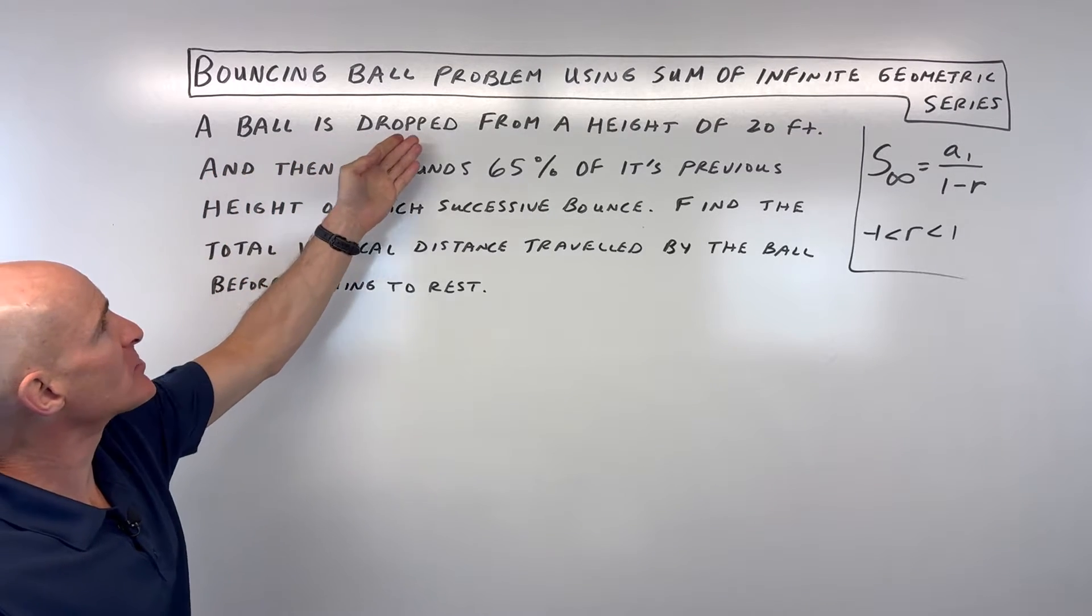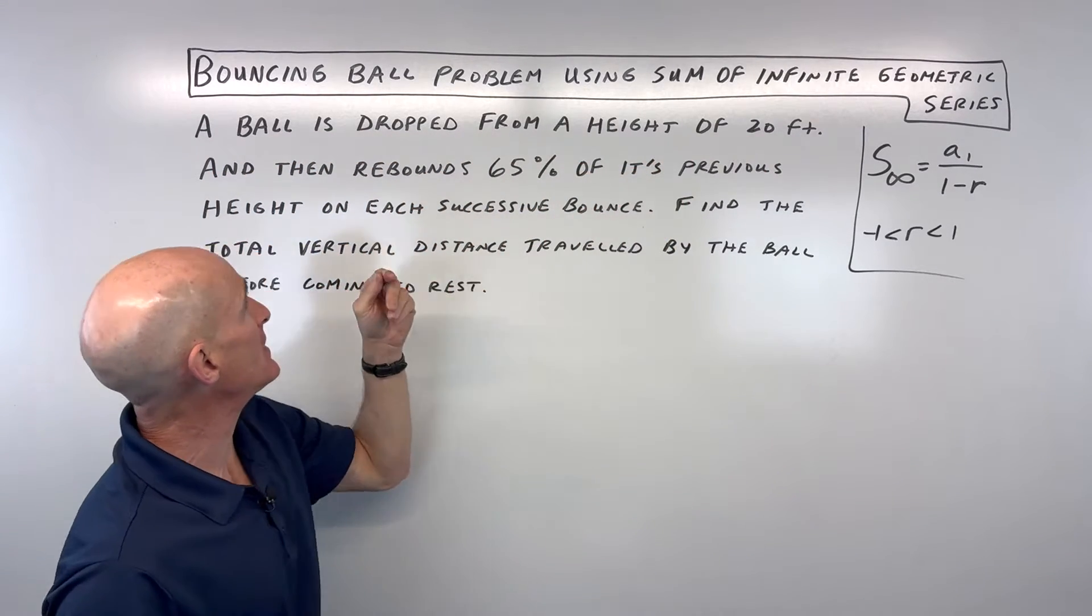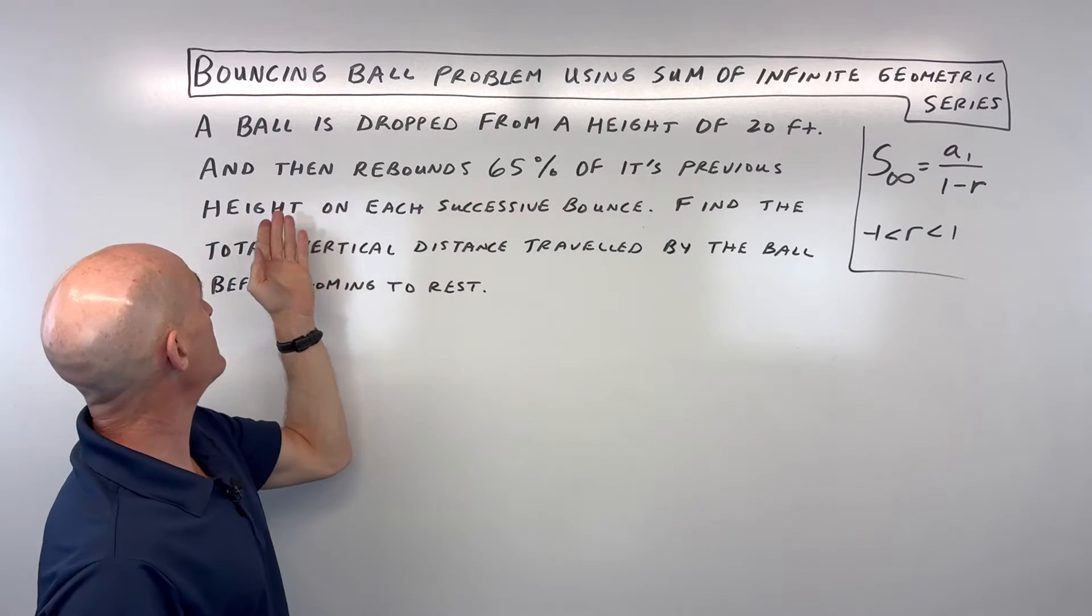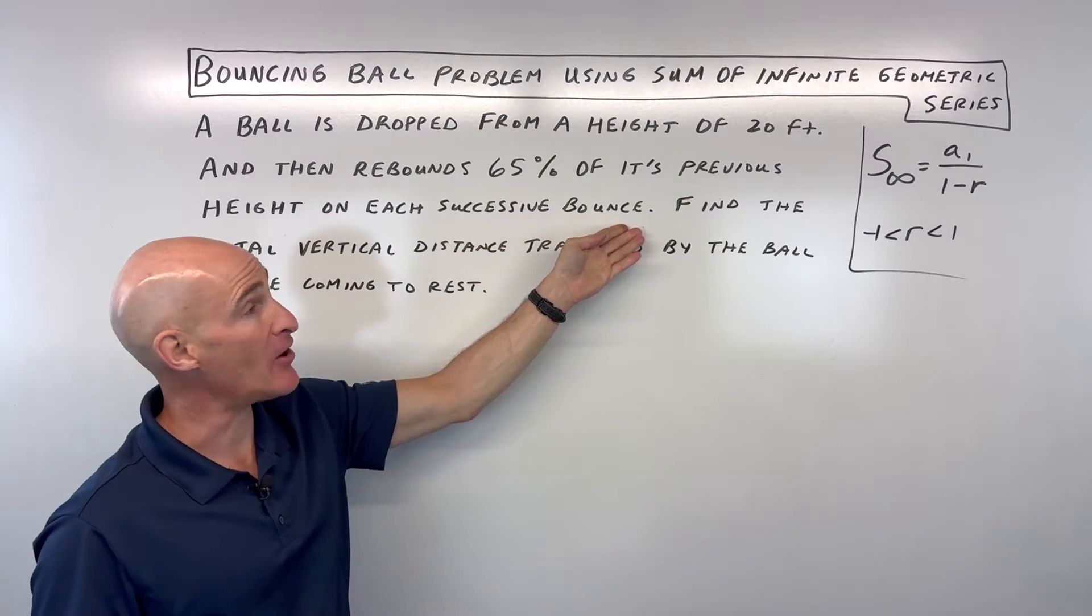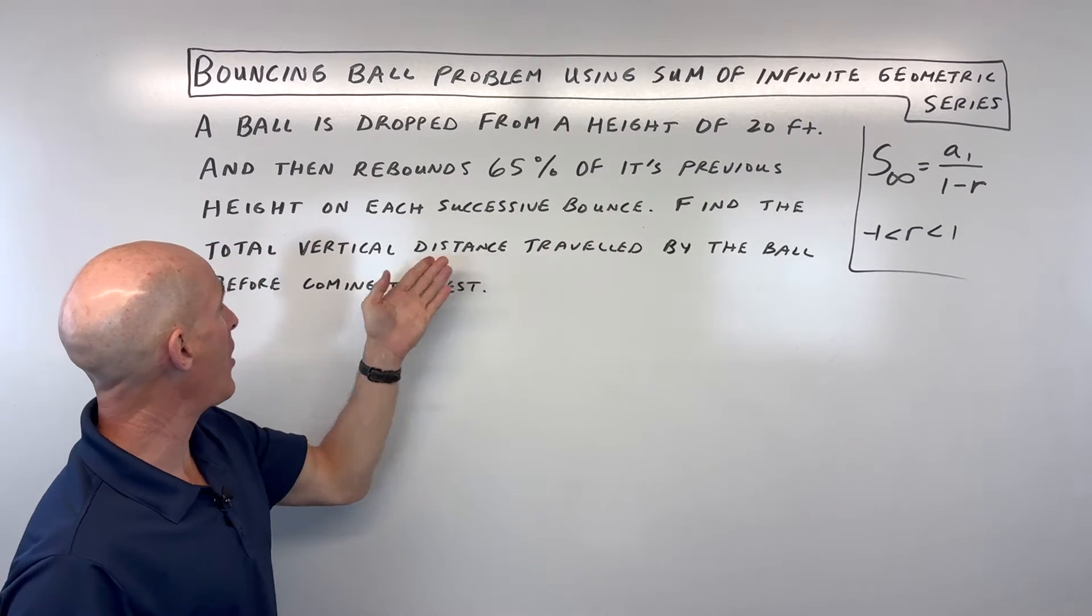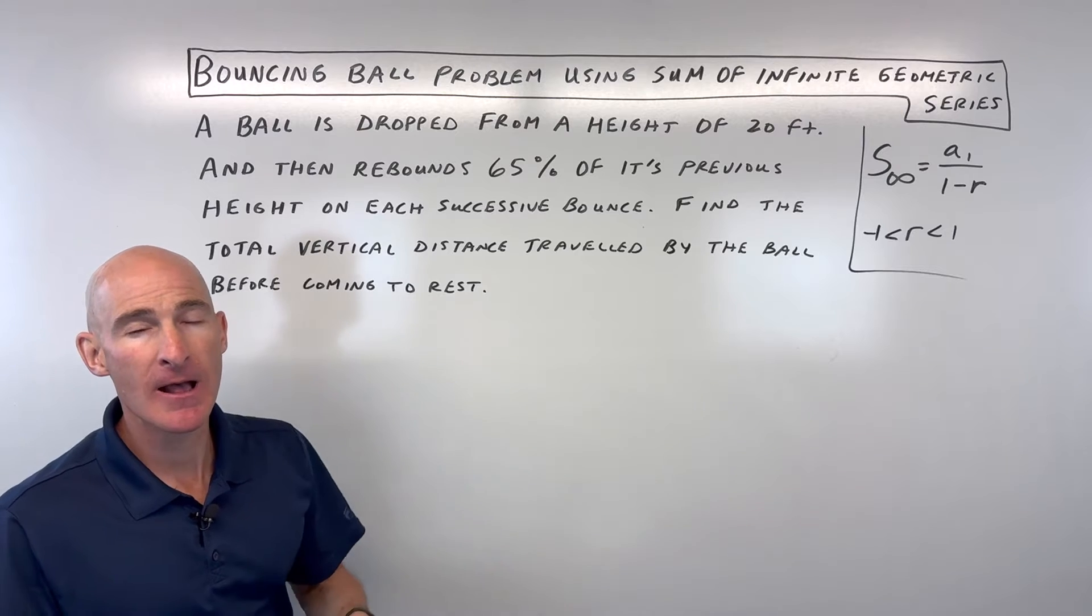A ball is dropped from a height of 20 feet, and then it rebounds 65% of its previous height on each successive bounce. Find the total vertical distance traveled by the ball before coming to rest.